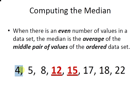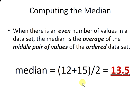There are three values less than this middle pair, there are three values greater than this middle pair. And the median is the average of these two numbers. So 12 plus 15 divided by 2 gives us 13.5. So that is the median of the expanded data set.